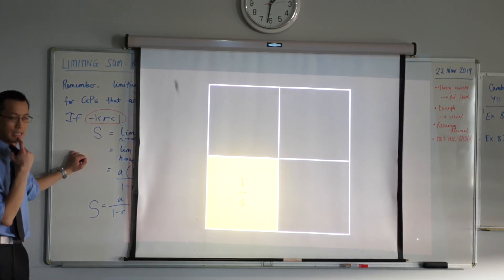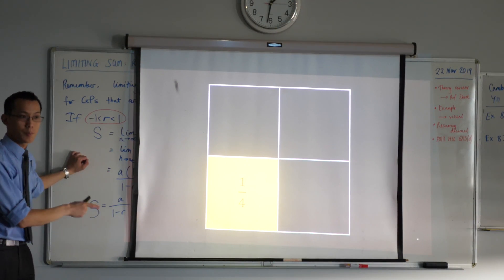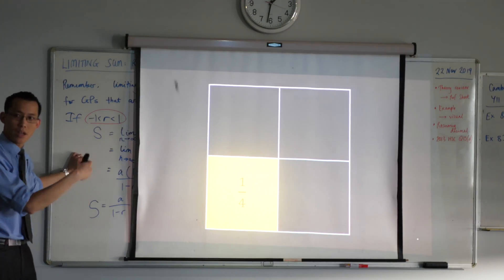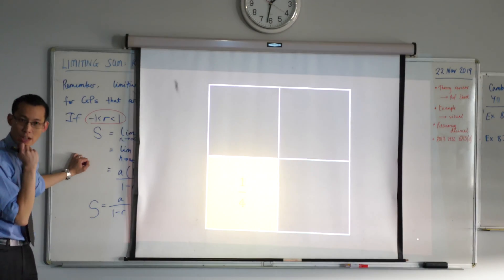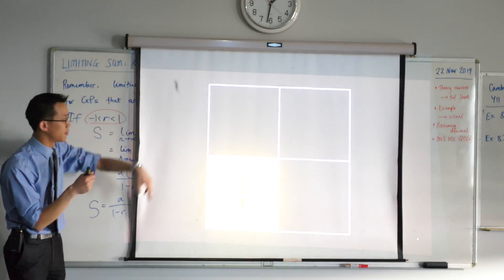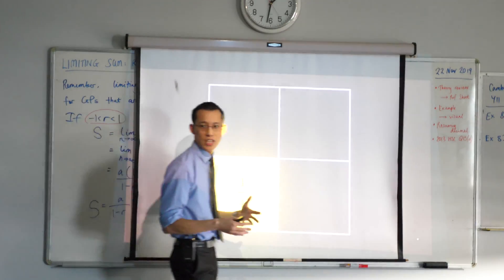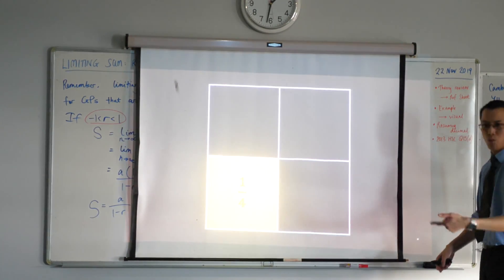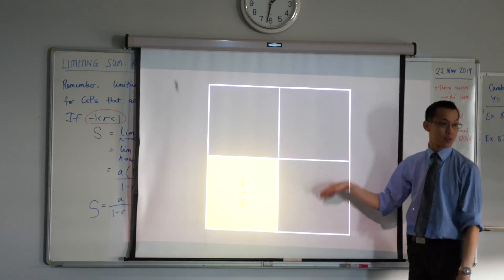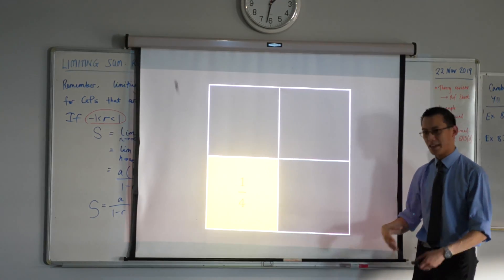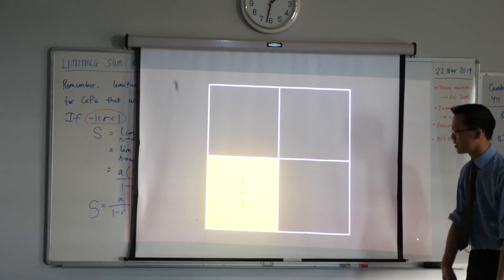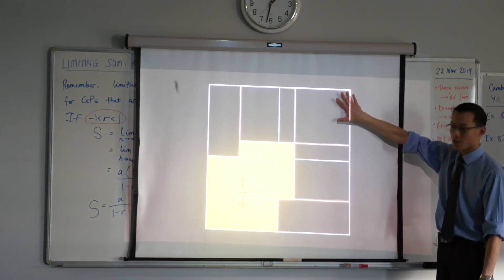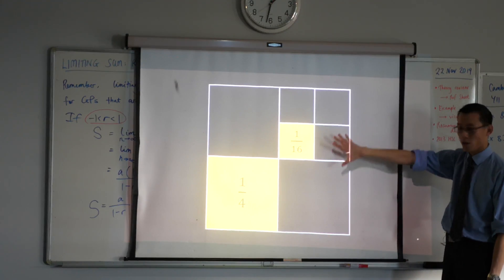Let's try and understand what's going on here. This is only the first term in the series. What would the next term look like? It's a 16th. How do I visualize a 16th? One-fourth of one-fourth. So I've got many quarters to choose from here, but in order to get a pattern set up, I'm going to take this quarter up into this corner over here. Are you with me so far?